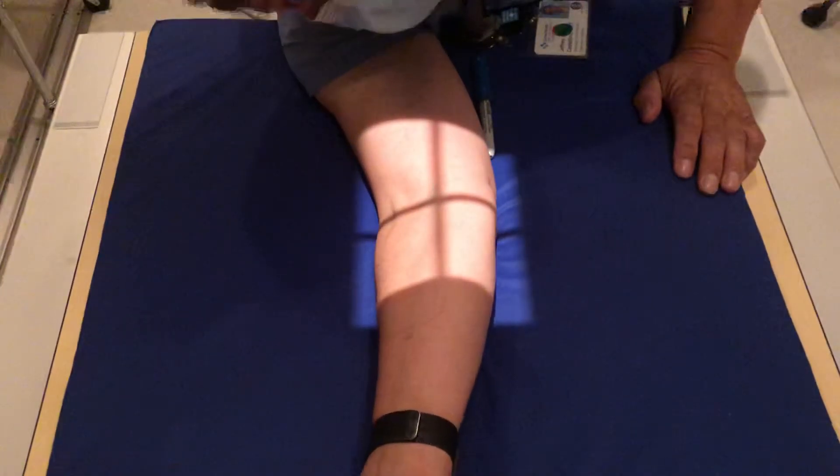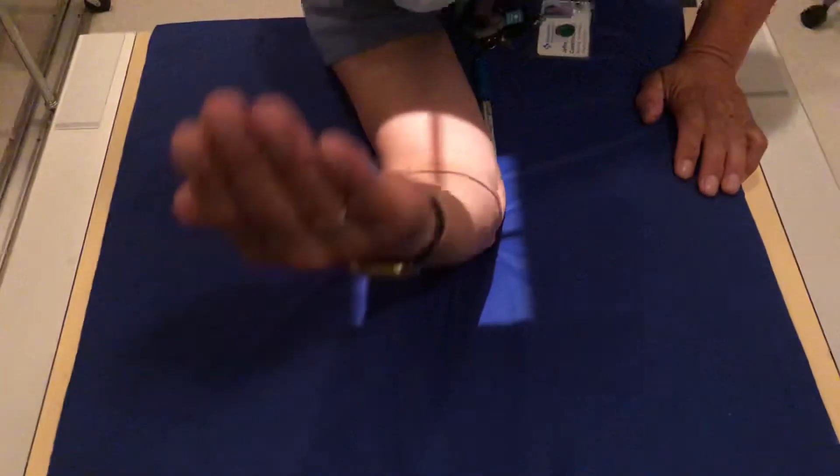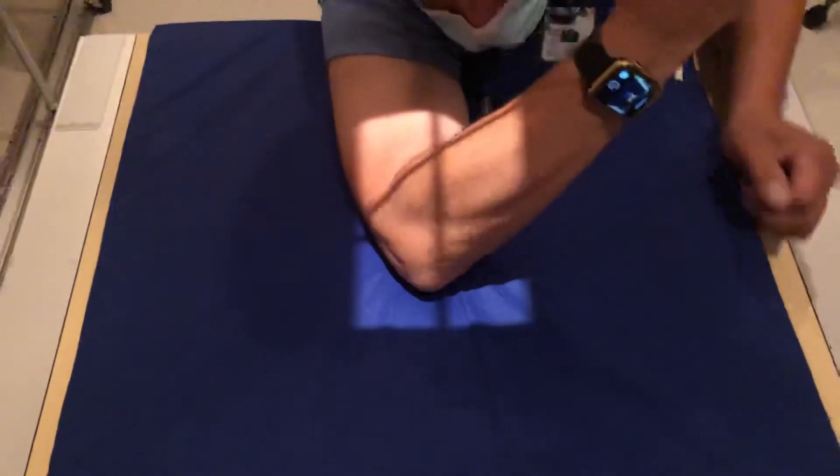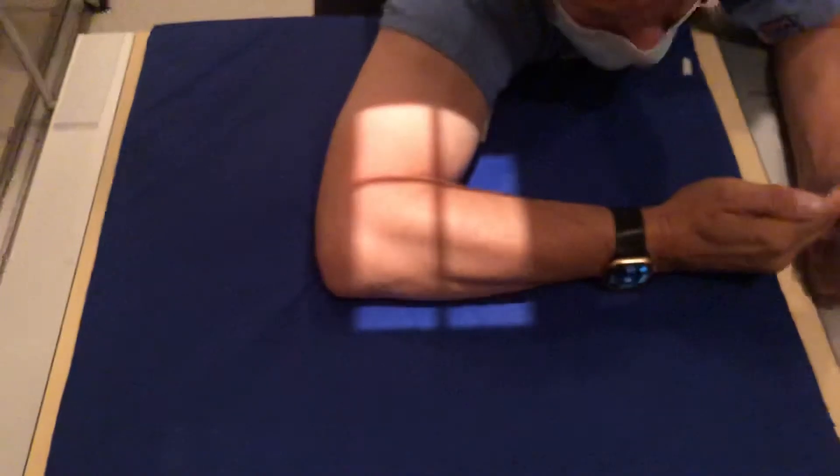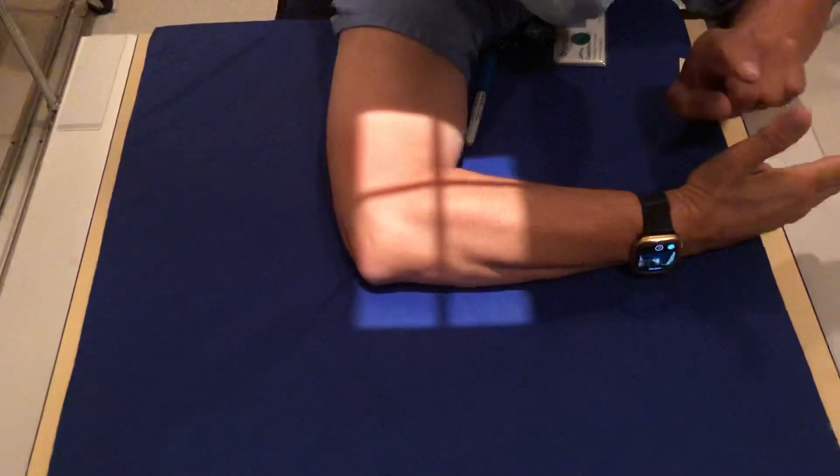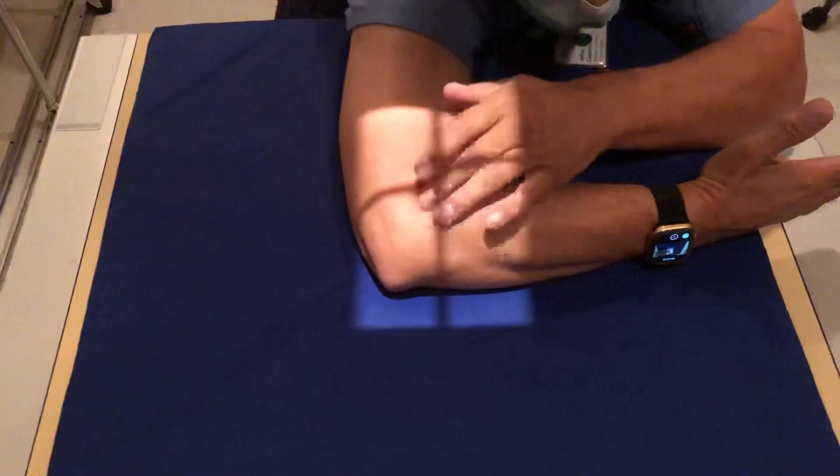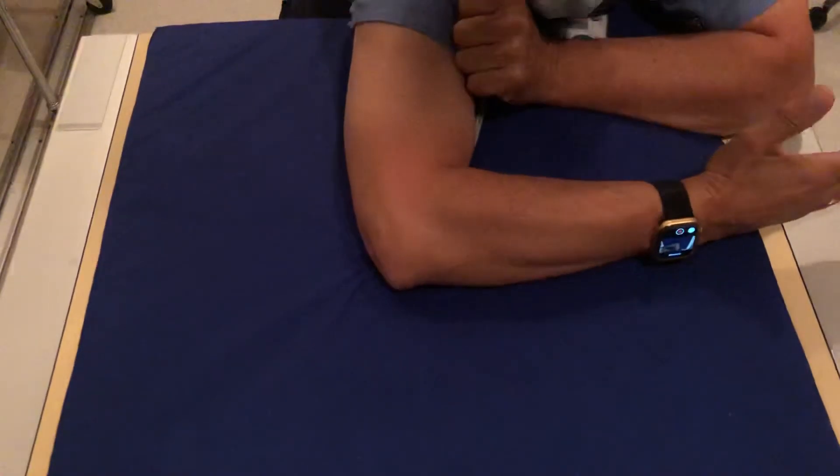The last view is you're going to make a 90-degree angle with your elbow, and then bring it down this way. Again, keeping the wrist, elbow, and shoulder in the same plane if you can.